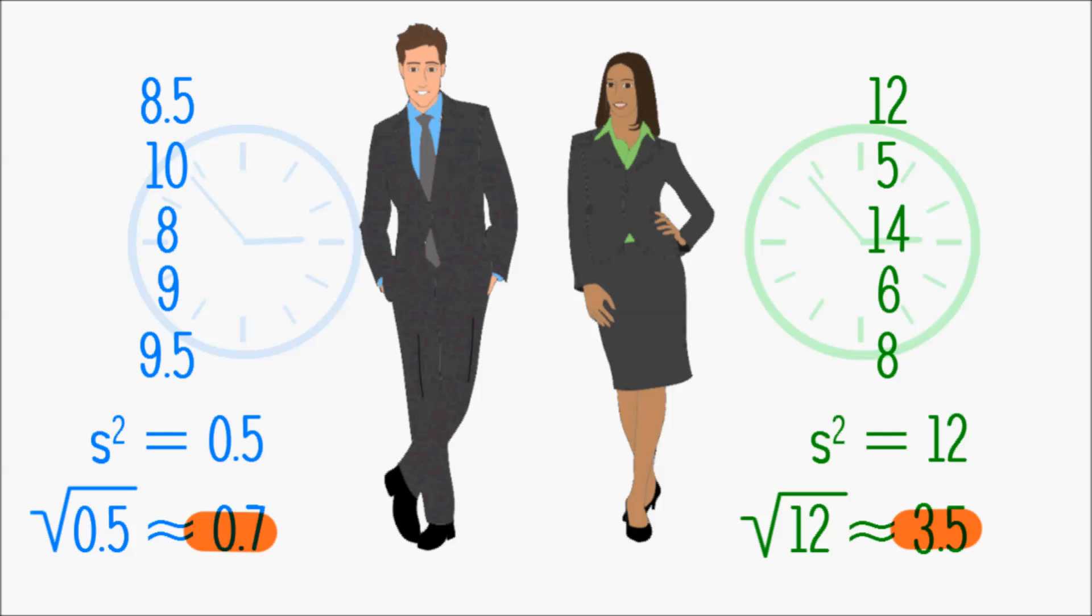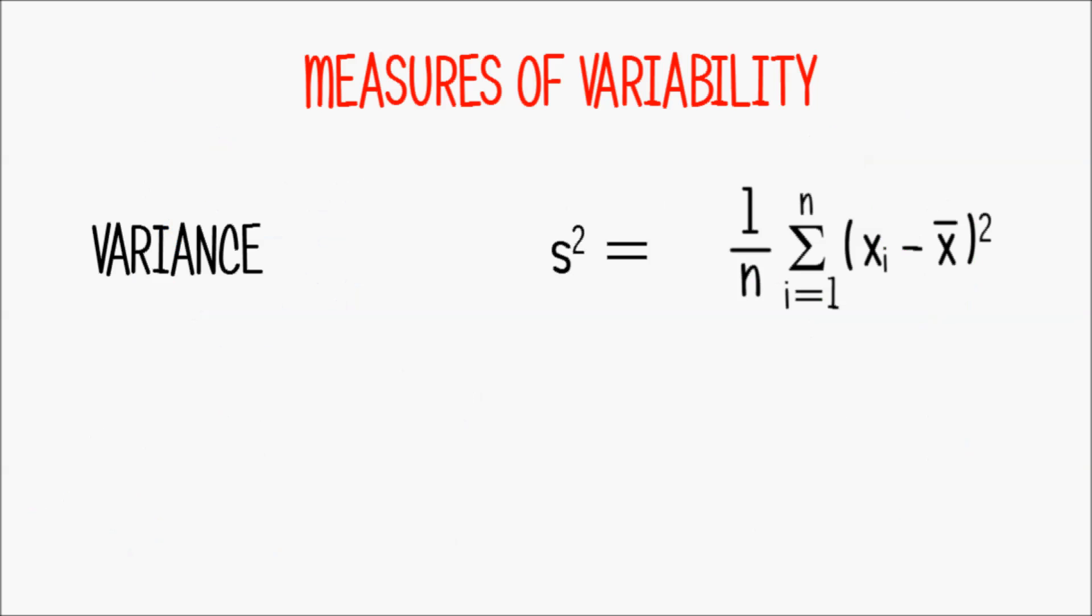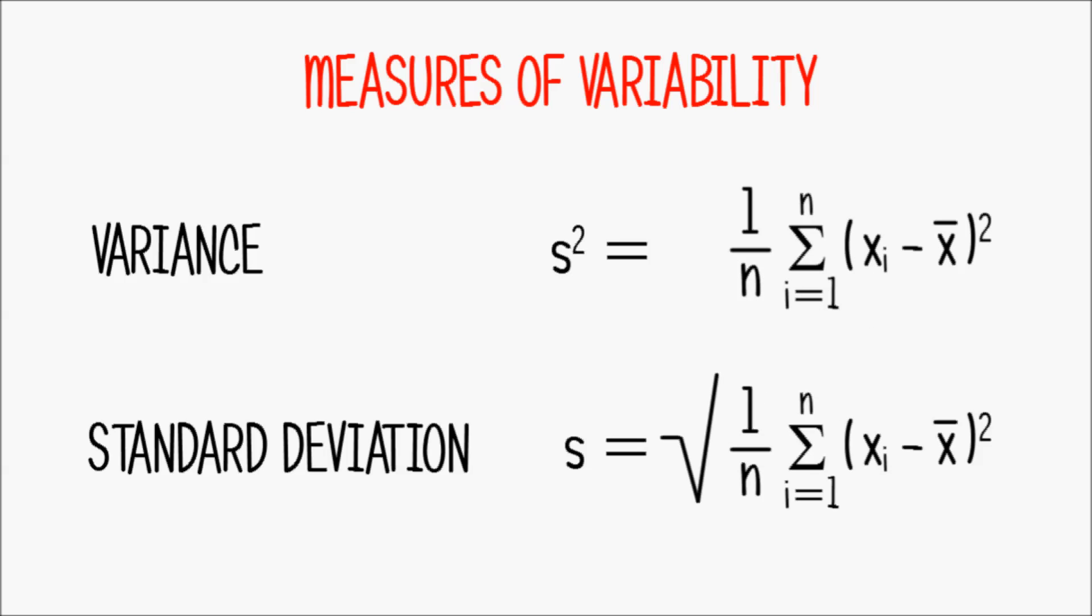For completeness, let's note down the formula for the standard deviation. The symbol is a lowercase s, no square this time. And we simply reuse the formula that we created for the variance and take the square root. And that is our third measure of variability.